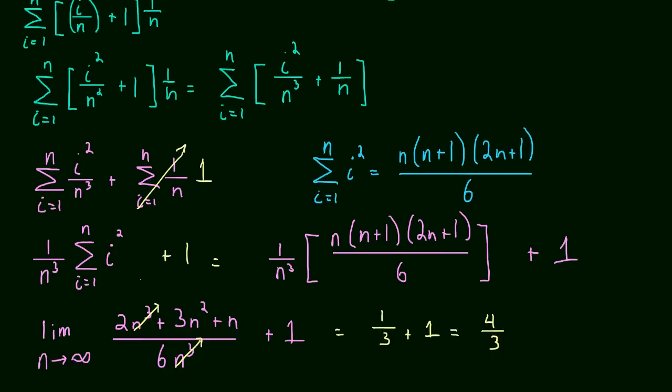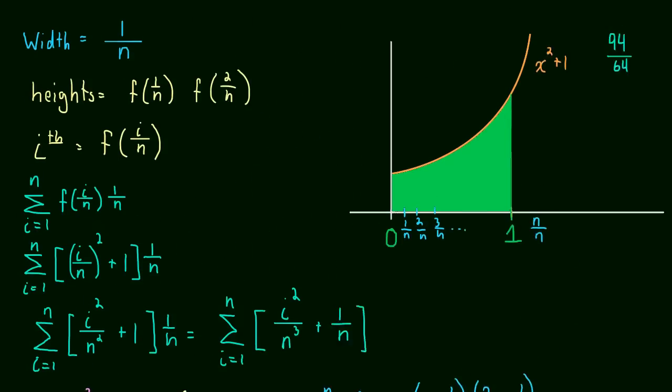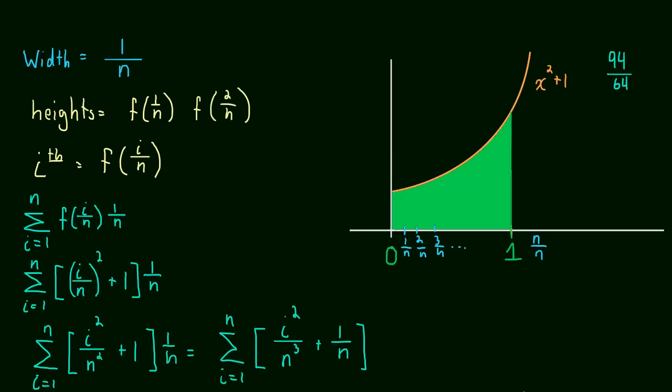Now let's take a look at some interesting things that happen. One is that we took the limit as n goes to infinity. Well, as n goes to infinity, look at what happens to the width of the rectangles. The widths start approaching zero. So as n goes to infinity, these approach zero.